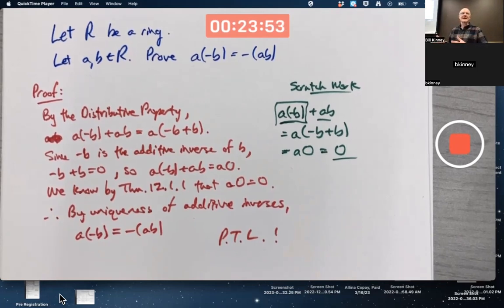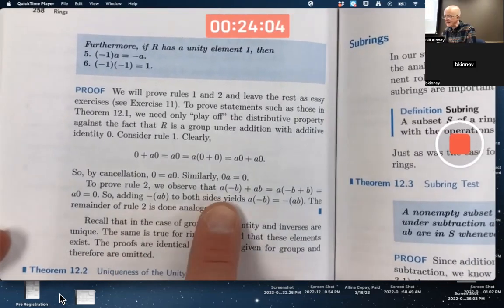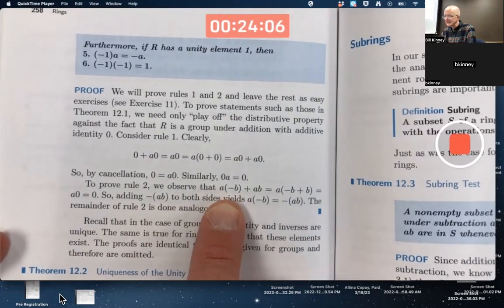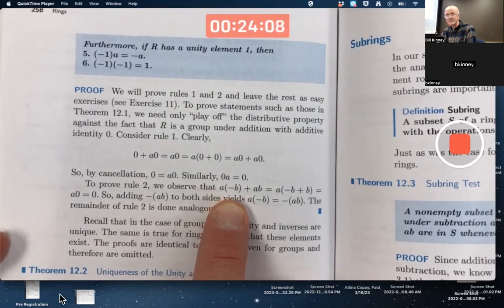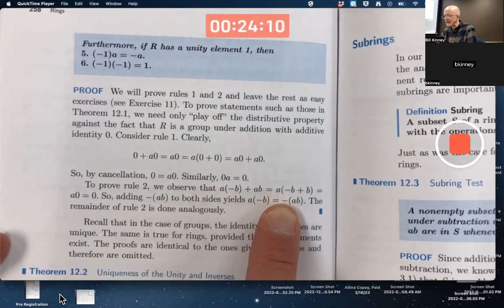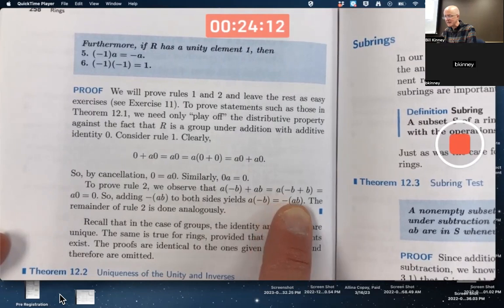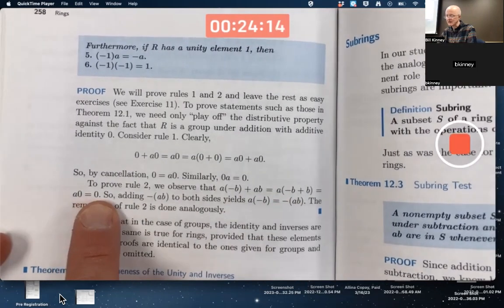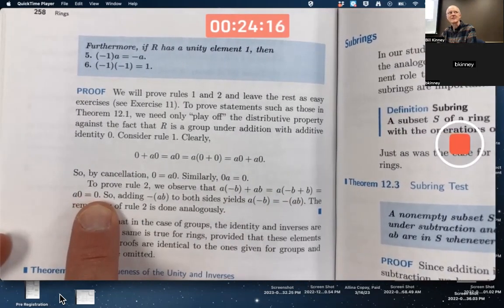Is this the way the book does it? I didn't look. Let's see. They're proving rule two here. Okay, yeah, they started the same way as us. A times negative B plus AB. Factor out the A. And negative B plus B is zero, and we know this is zero.